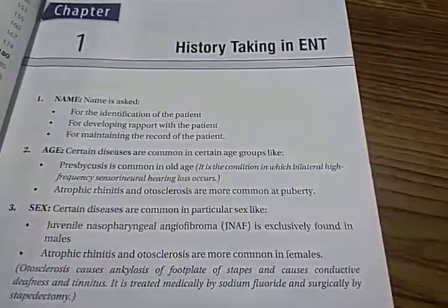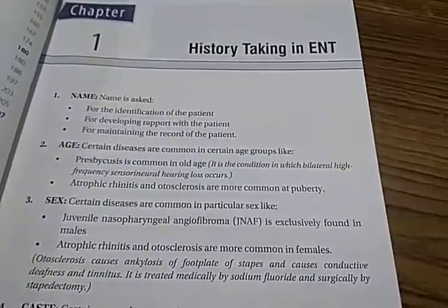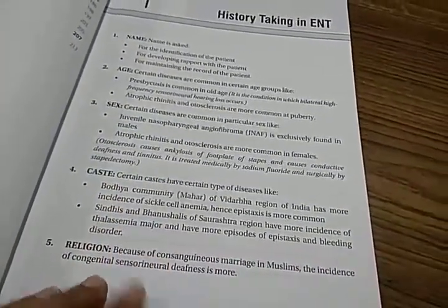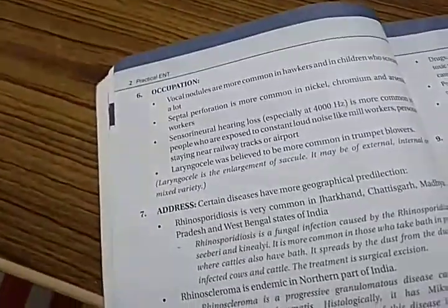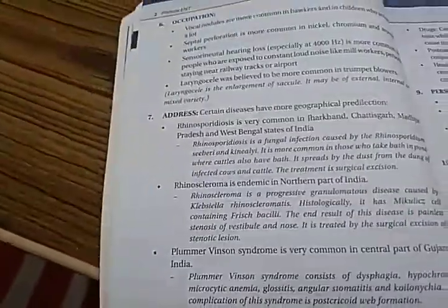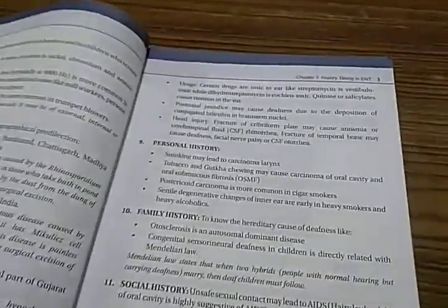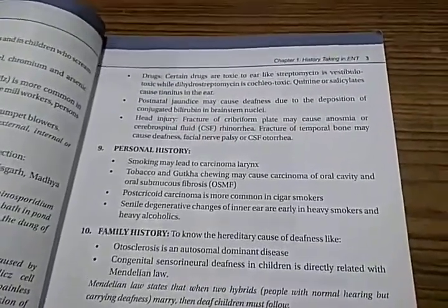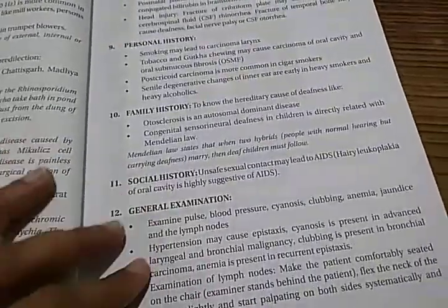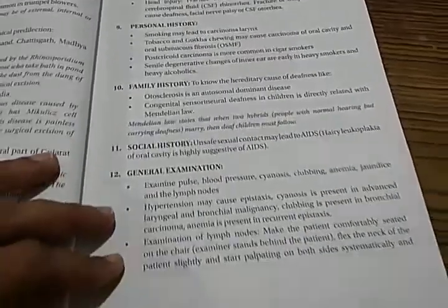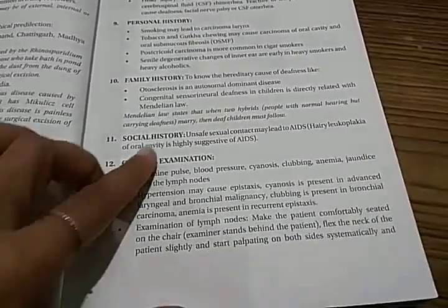Let's see history taking in ENT: name, age, gender, sex, caste - what the hell - caste, religion, occupation, address, past history, personal history, family history, general examination, social history, general examination.